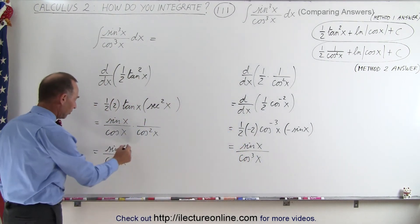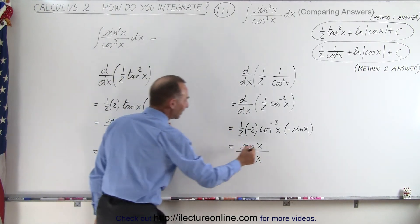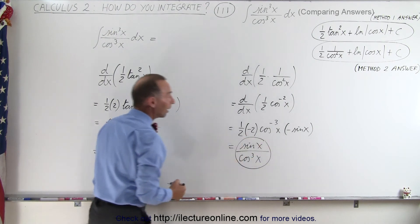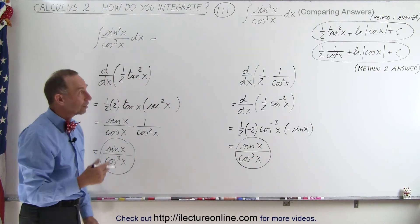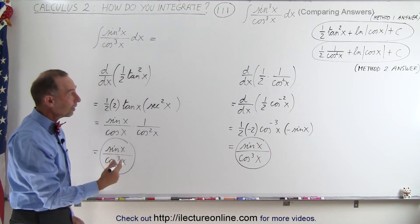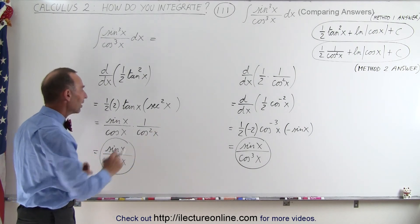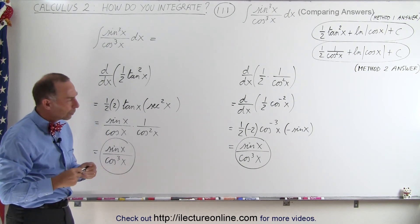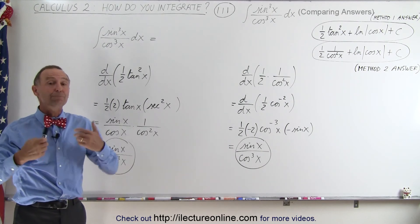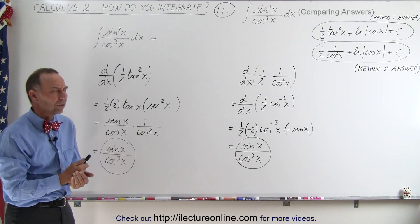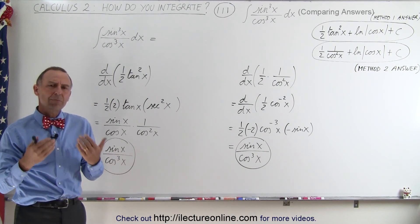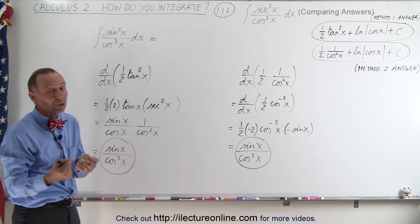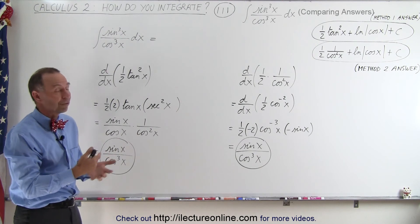And then when you compare the two answers sure enough we end up with the exact same result. Now of course when we also take the derivative of the natural log of the cosine of x and we add that to both of these answers then we'll get the original integral again. So it looks like we did the problem correctly in both cases using the two methods. But it does appear as if the answers are different and when you plug in values for x you get different numbers.